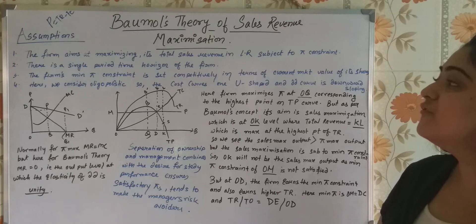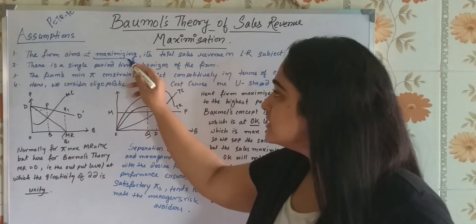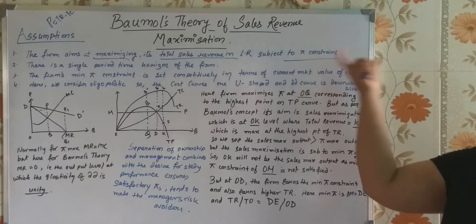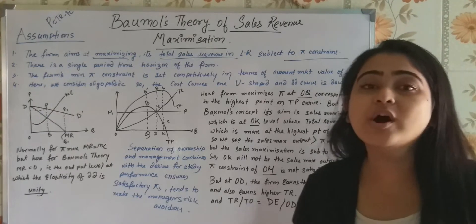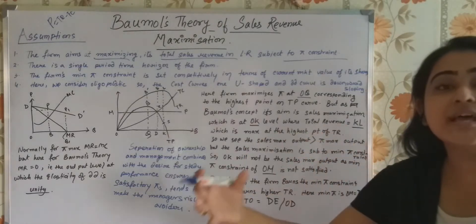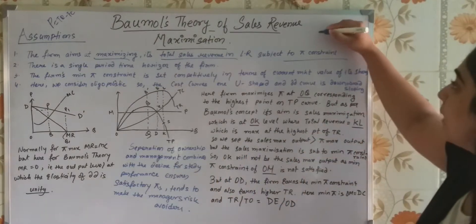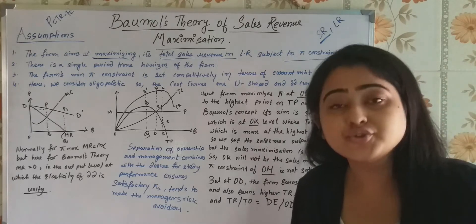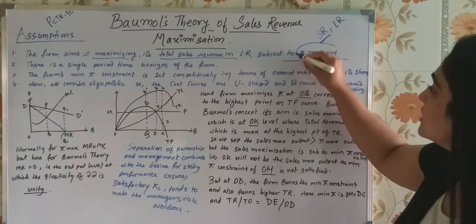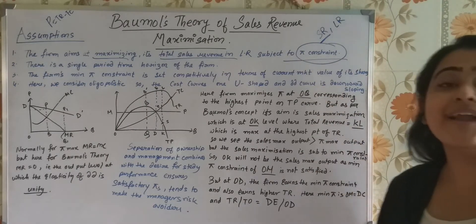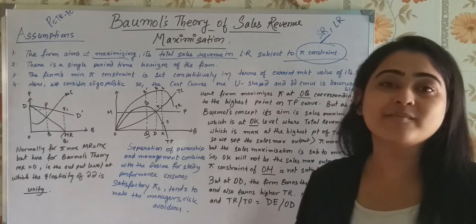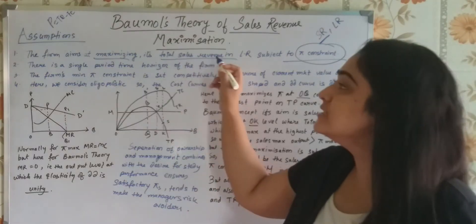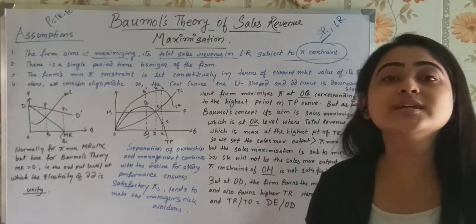The first assumption states that the firm aims at maximizing its total sales revenue in the long run subject to profit constraint. Remember this, there is this profit constraint. In short run, our economy, the whole process of business or the economy is divided into two parts. One is the short run, one is the long run. For short run, the company, the business should concentrate on profit. And that profit will be this profit constraint. The minimum profit that a business should incur to sustain in the market. And once it has attained that profit, it needs to concentrate on sales maximization.